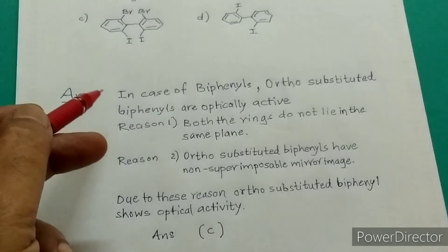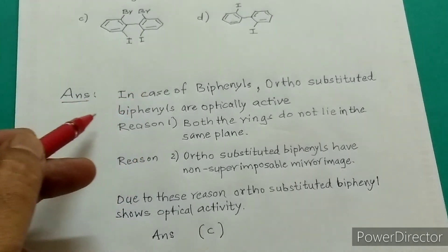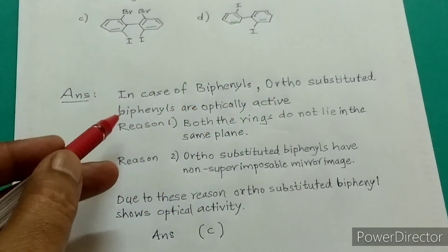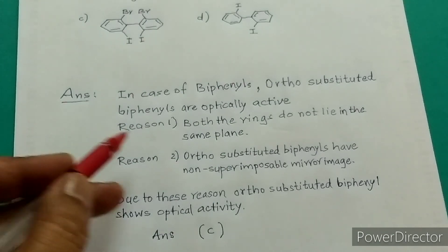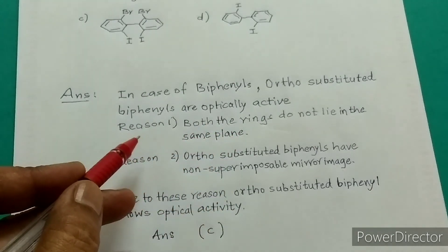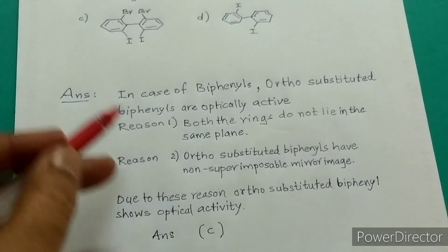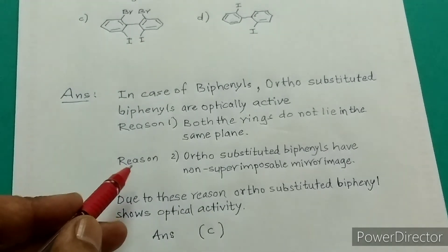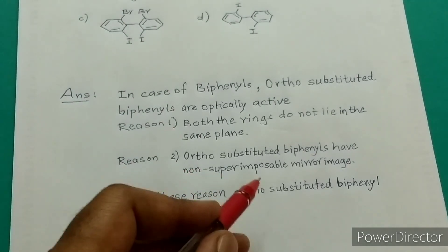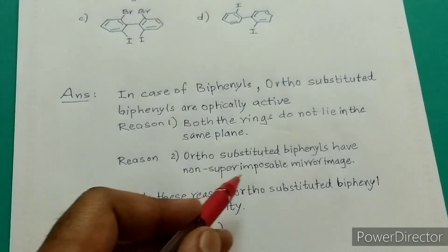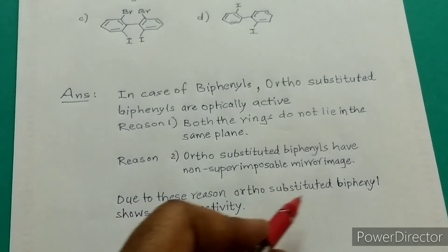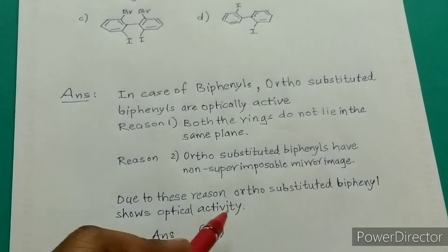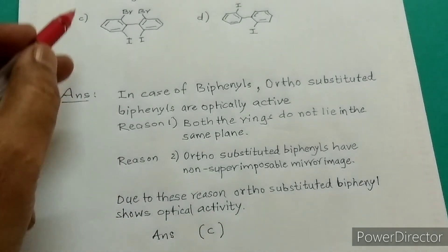Now you can write down the detailed reason for this answer. In biphenyls, ortho-substituted biphenyls are optically active. The reason is: both rings do not lie in the same plane due to steric hindrance, and ortho-substituted biphenyls have a non-superimposable mirror image. Due to these reasons, ortho-substituted biphenyls show optical activity. Therefore option C is the correct answer.